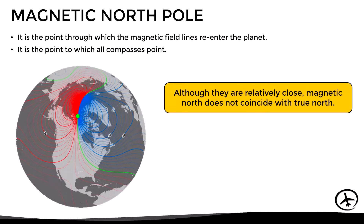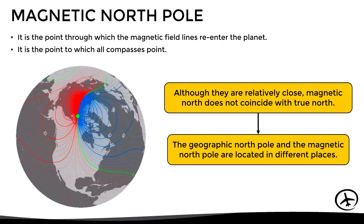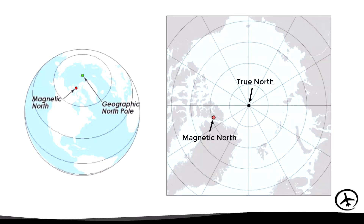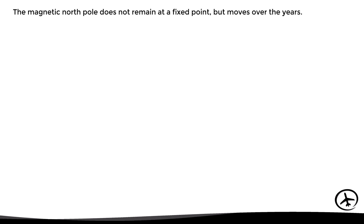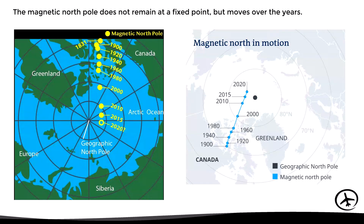Although they are relatively close, magnetic north does not coincide with true north — the geographic north pole and the magnetic north pole are located in different places. The geographic north is in the middle of the Arctic Ocean, while the magnetic north is closer to Canada and Greenland. Something important to mention is that the magnetic north pole does not remain at a fixed point but moves over the years. We can see how the magnetic north has been shifting since the 1900s from northern Canada towards Siberia.